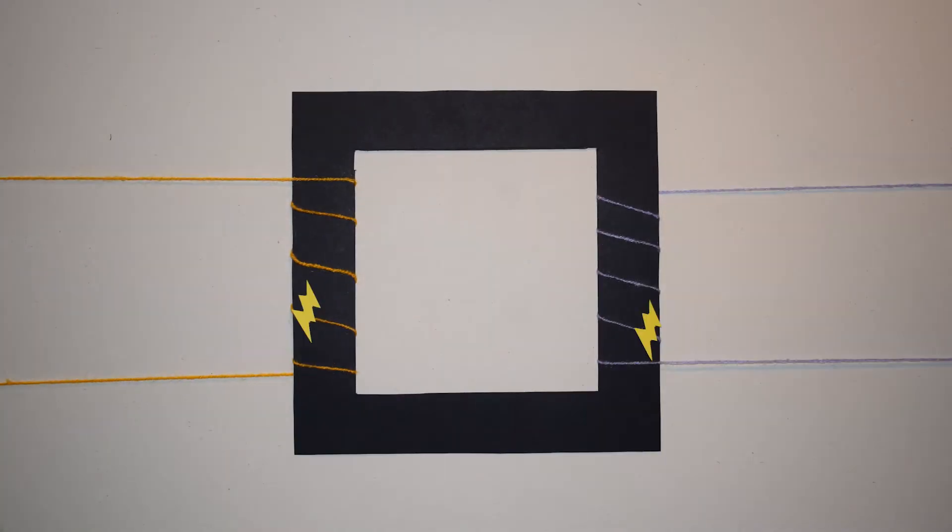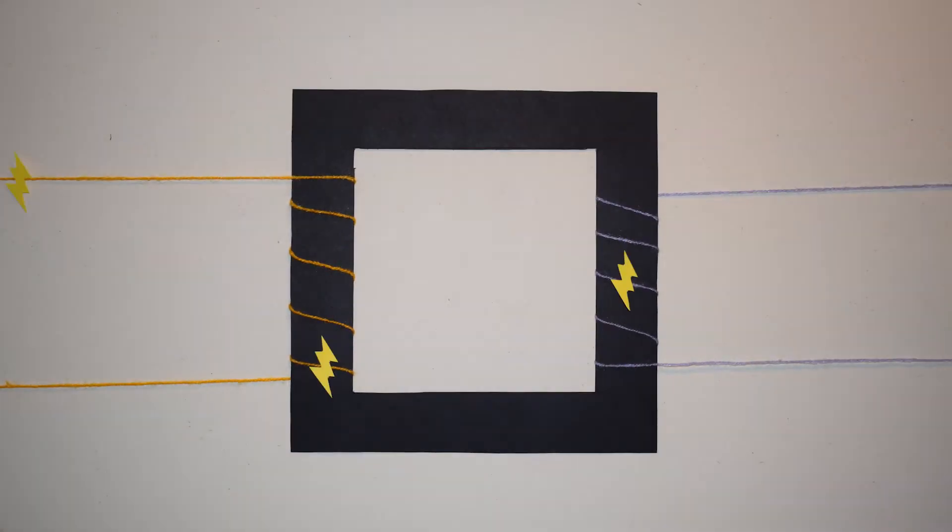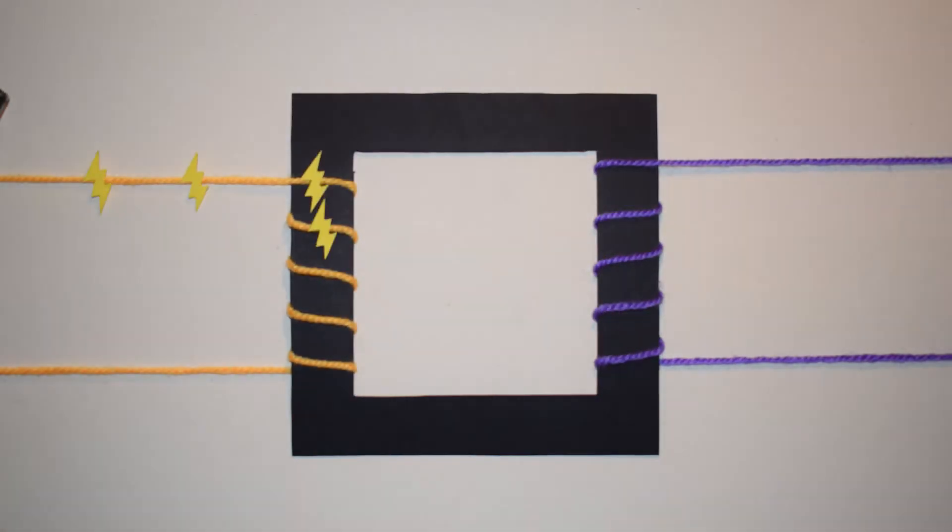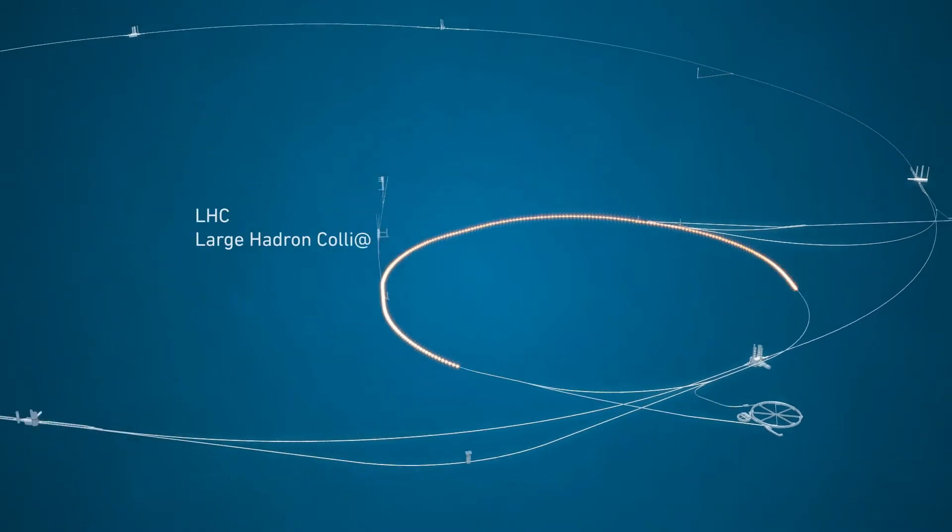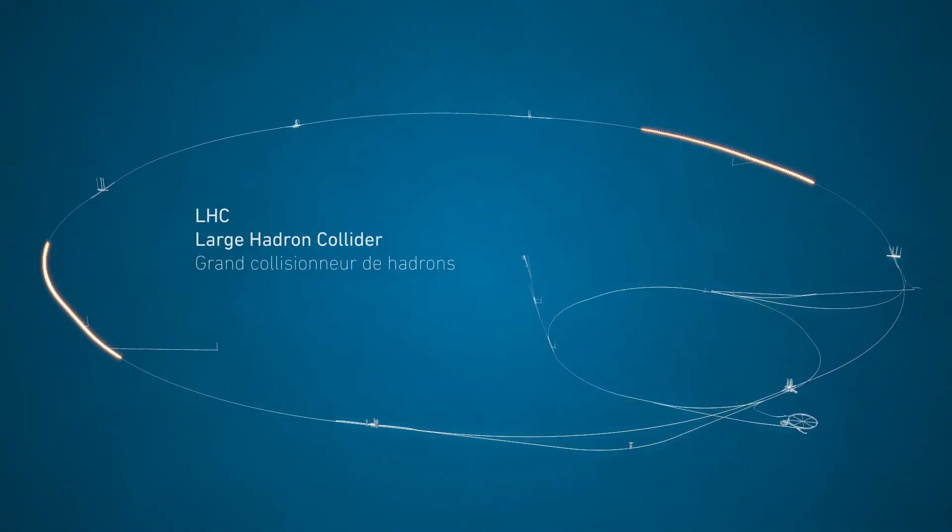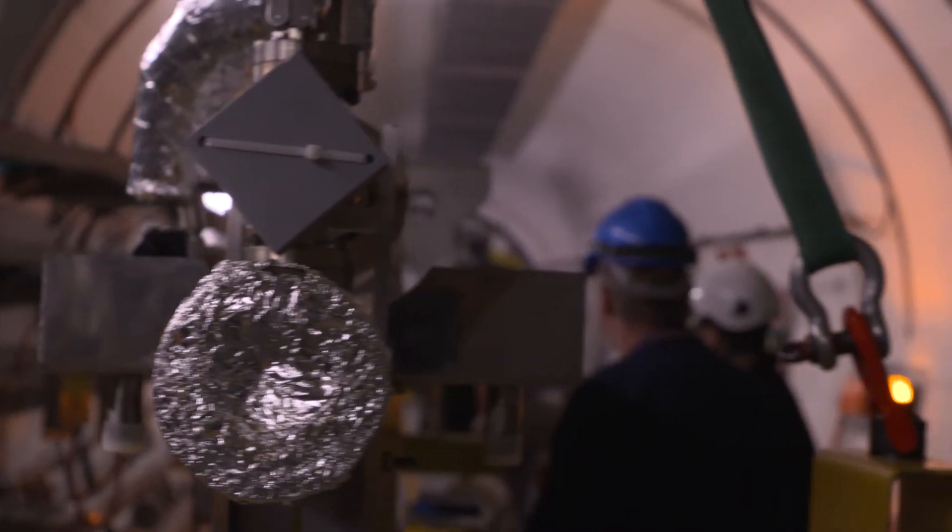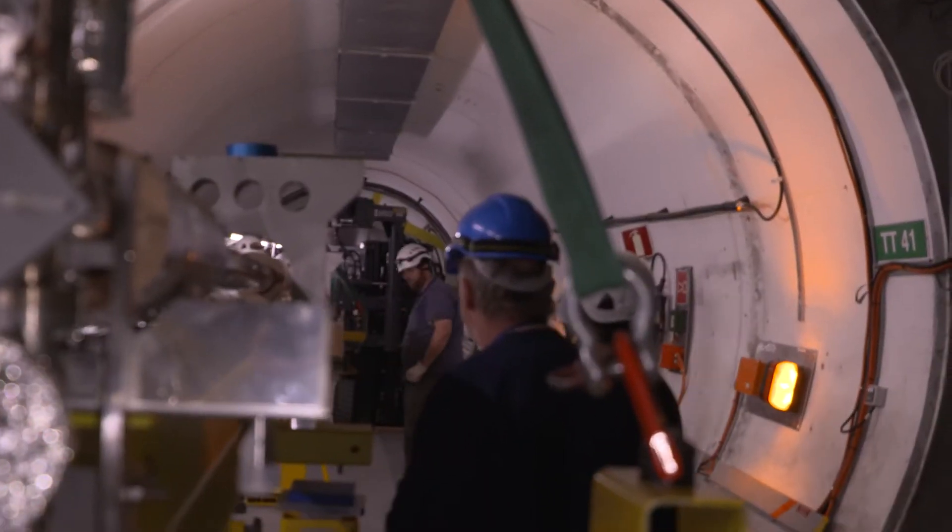Plasma wakefield acceleration is a bit like a transformer. You give some input energy, and that energy gets transferred to the output. If we want the highest output possible, then we have to put in as much energy as possible as well. And right now, the most energetic particles in the world are the protons accelerated at CERN. This is why CERN was the place chosen to set up the Advanced Proton Driven Plasma Wakefield Experiment, or AWAKE.